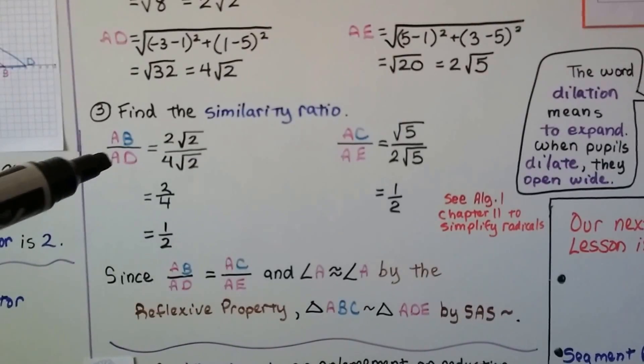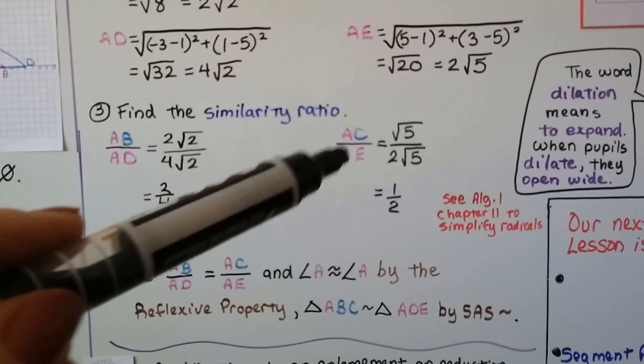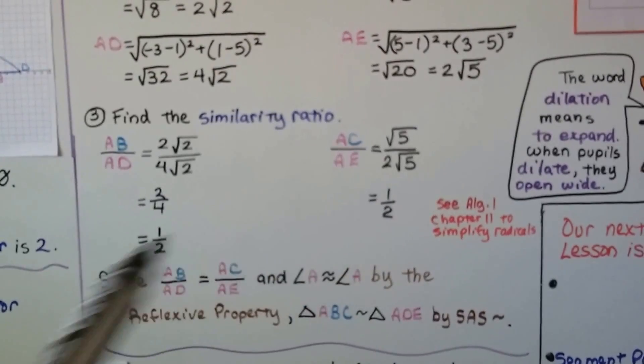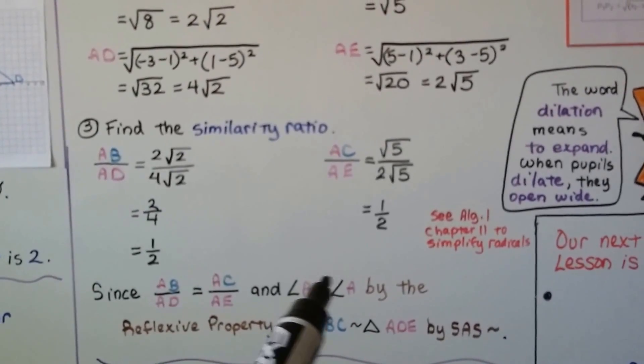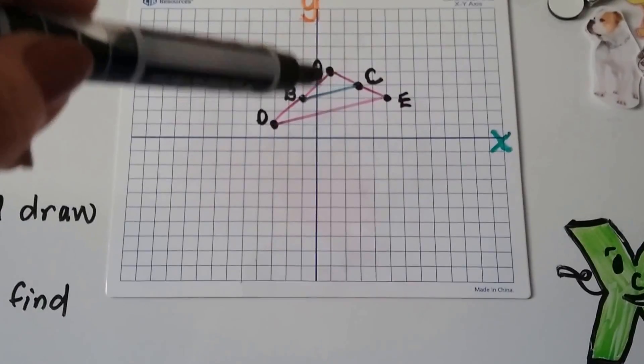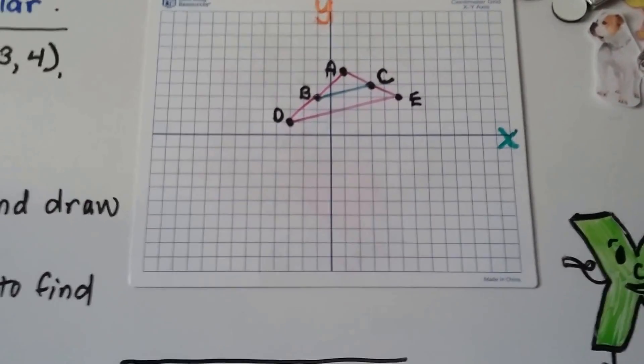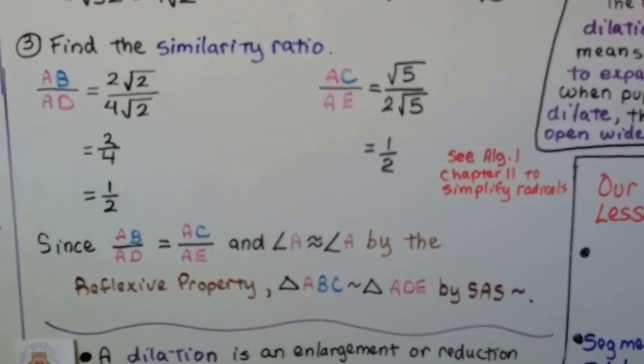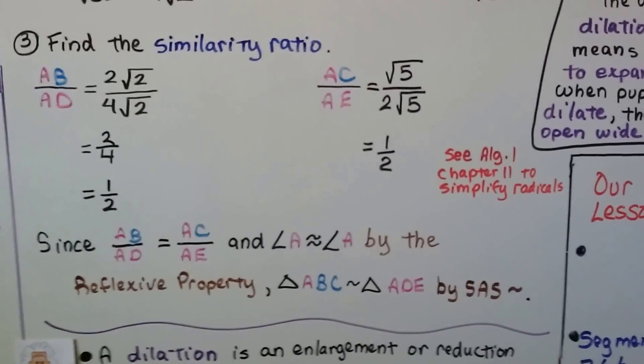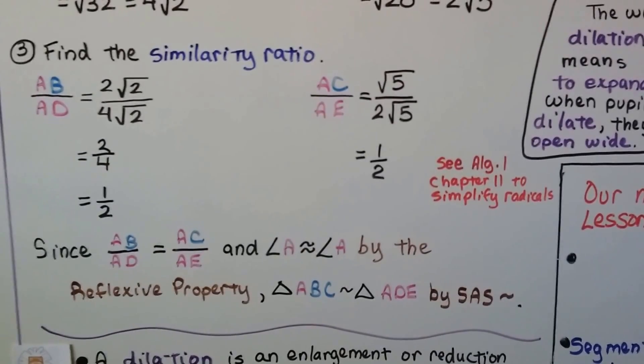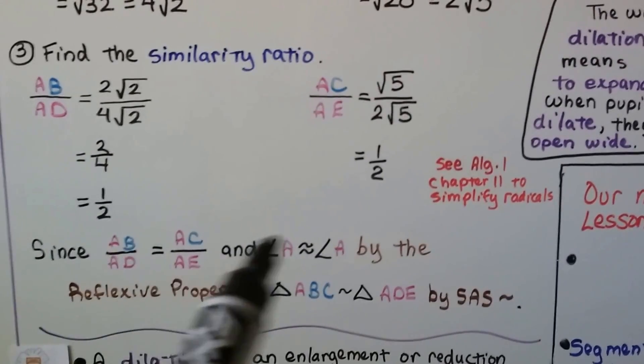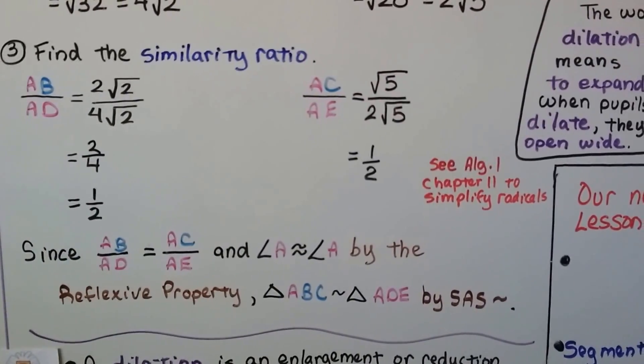Since AB/AD equals AC/AE, they're both a half, and angle A is congruent to angle A by the reflexive property. Then triangle ABC is similar to triangle ADE by side angle side similarity.